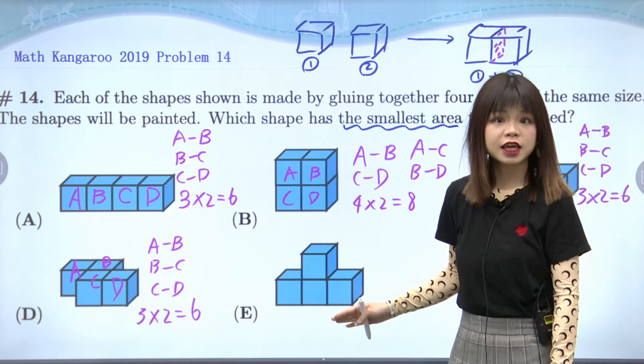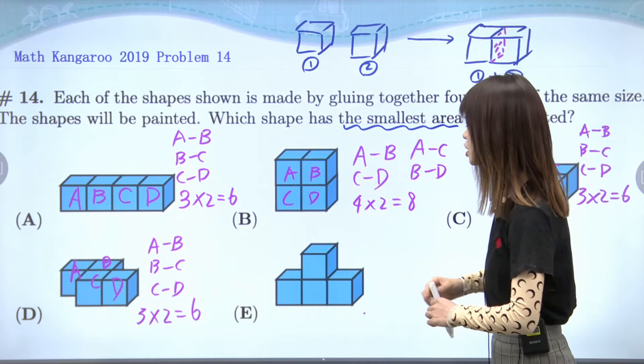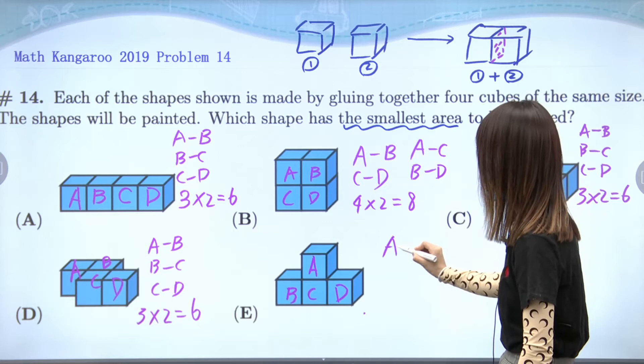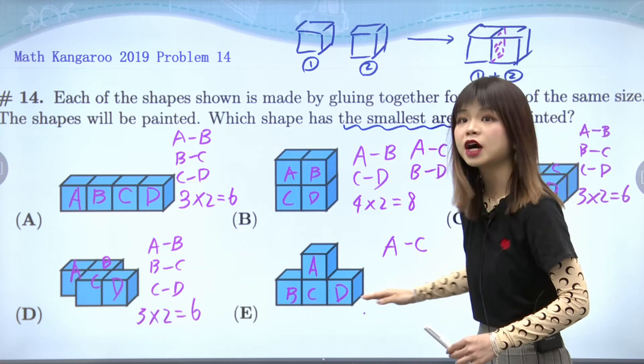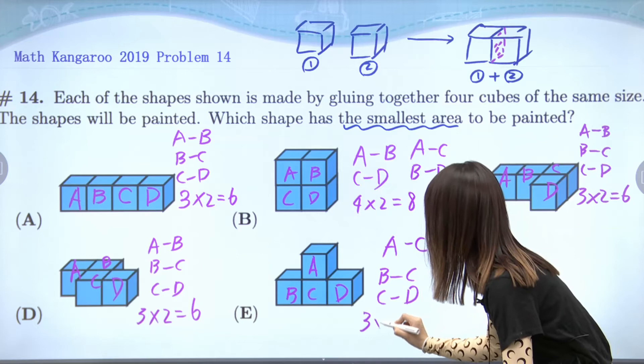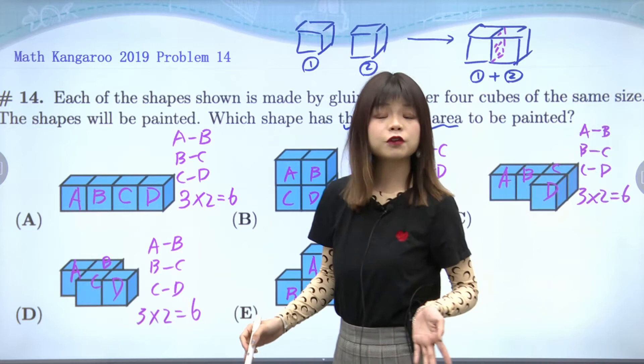Finally, we have choice E, which is a two-layer shape. We want to find connections in order, starting from top to bottom. Connecting the top layer to the bottom layer, we have A and C. Then for the bottom layer, we have B and C connecting, and also C and D. So in total, three times two equals six hidden faces.